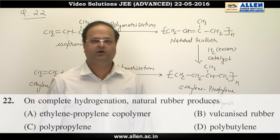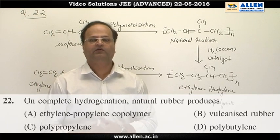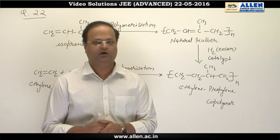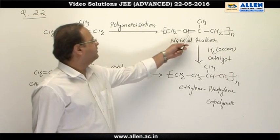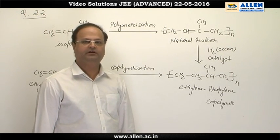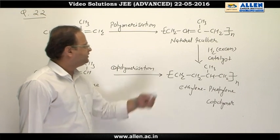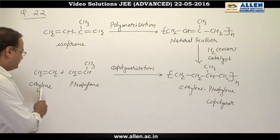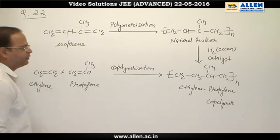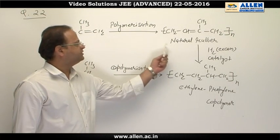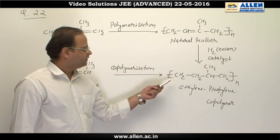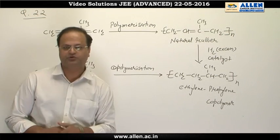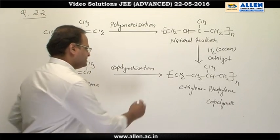Question number 22 is about the polymer of isoprene. As we know, the polymer of isoprene is natural rubber, and the polymer contains a double bond. When it is completely reduced, we get reduced natural polymer, which is also obtained by co-polymerization of ethylene and propylene. So reduced natural rubber is the co-polymer obtained from ethylene and propylene, which is given in option A. So the answer is A.